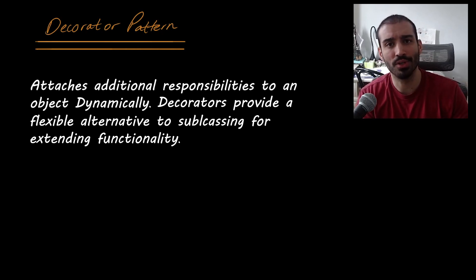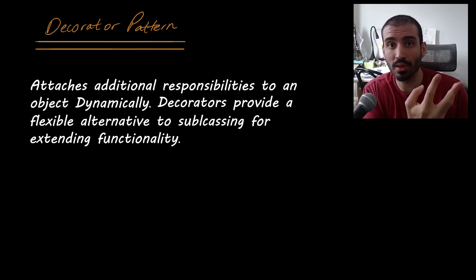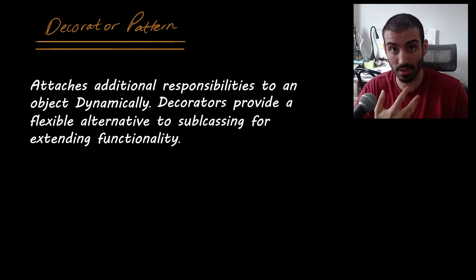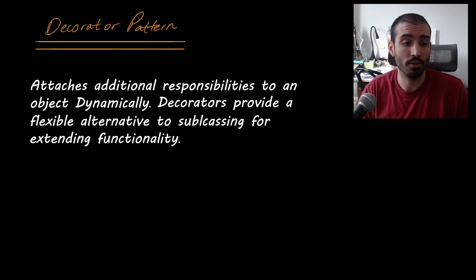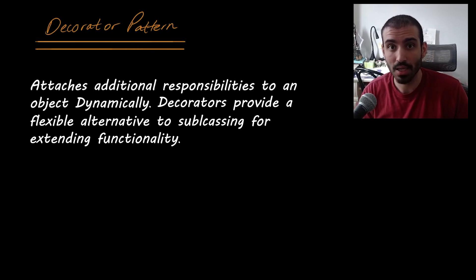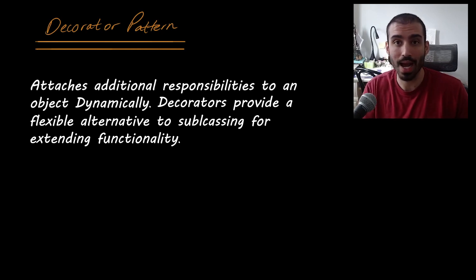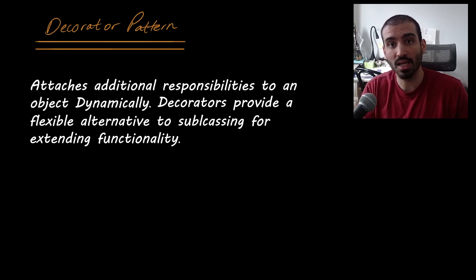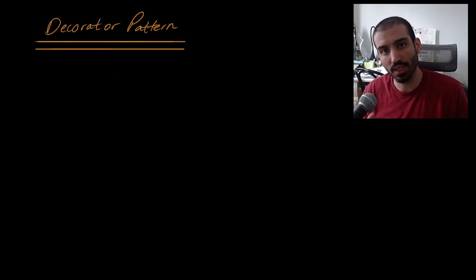A classic example in OOP is you have an animal class as the superclass, and then a dog class as a subclass. You have a speak method on the parent class and you override that in the dog class — so when the dog speaks it barks, whereas if you have a cat subclass, when the cat speaks it meows. This is typically how you add functionality through subclassing.